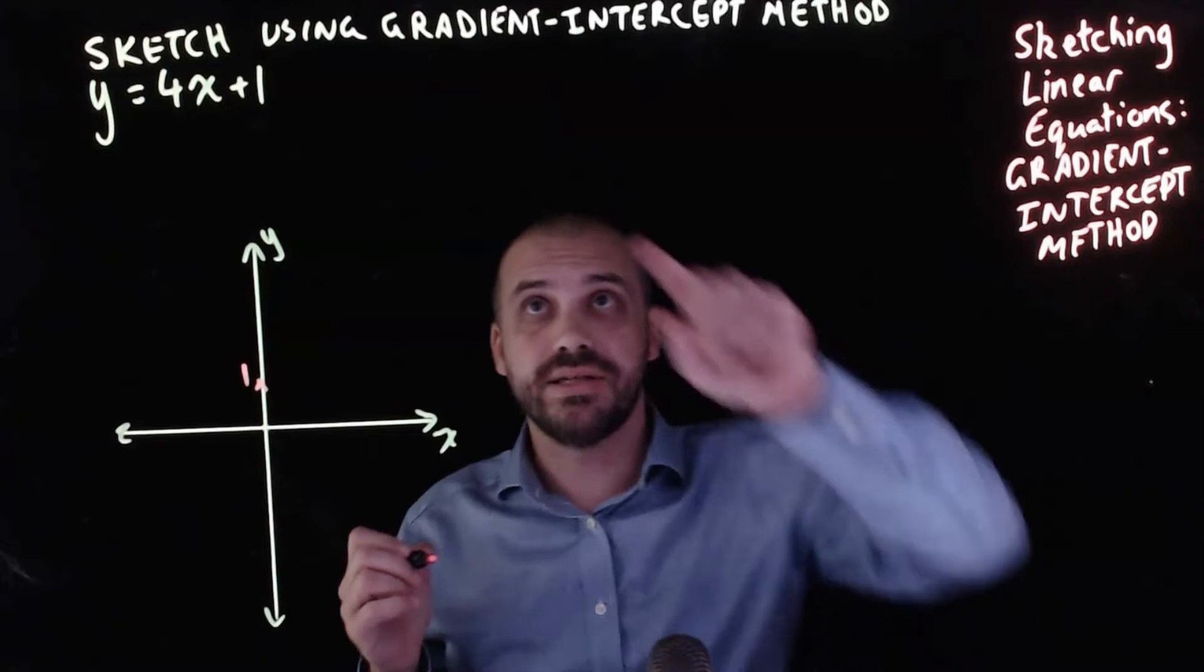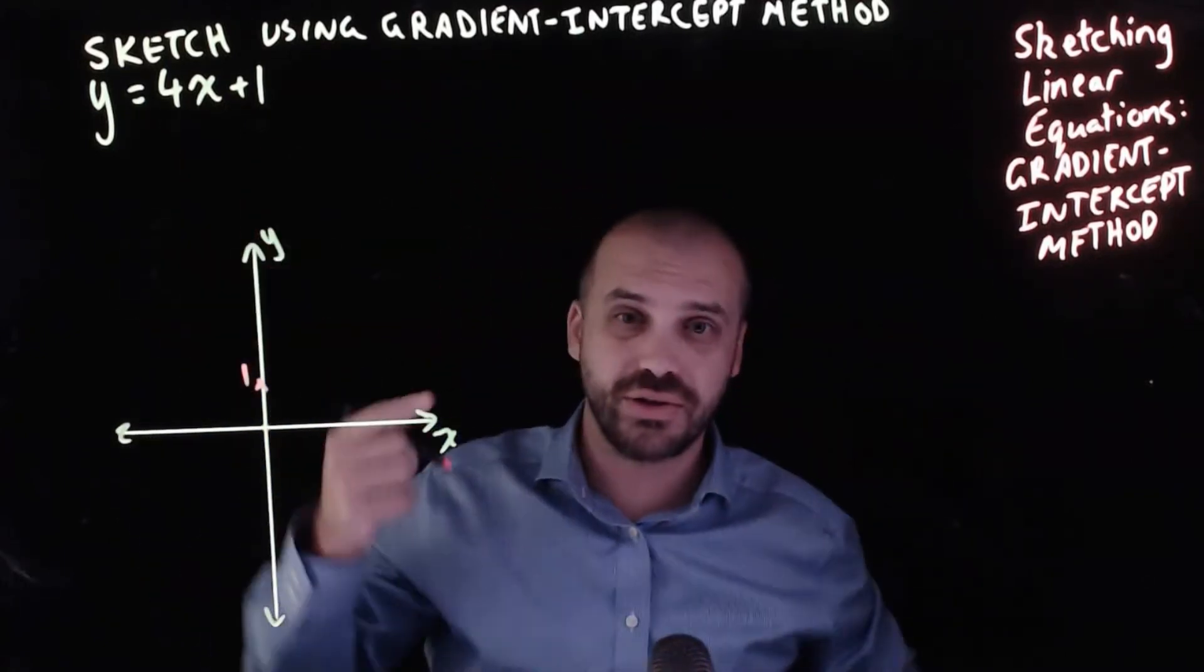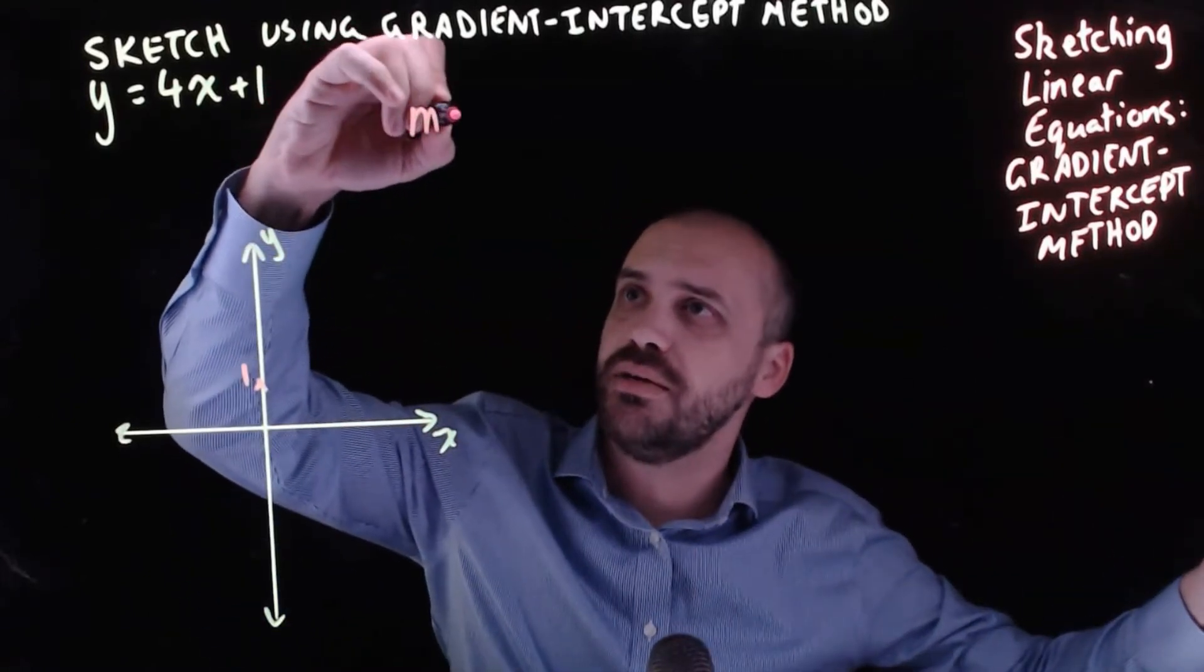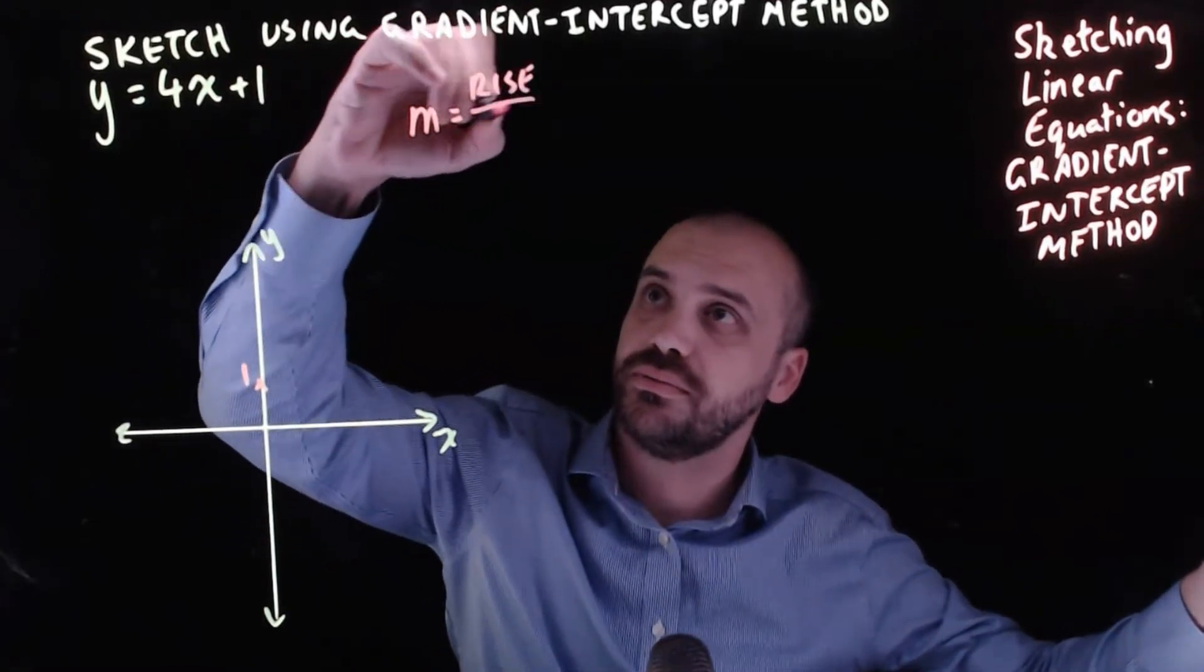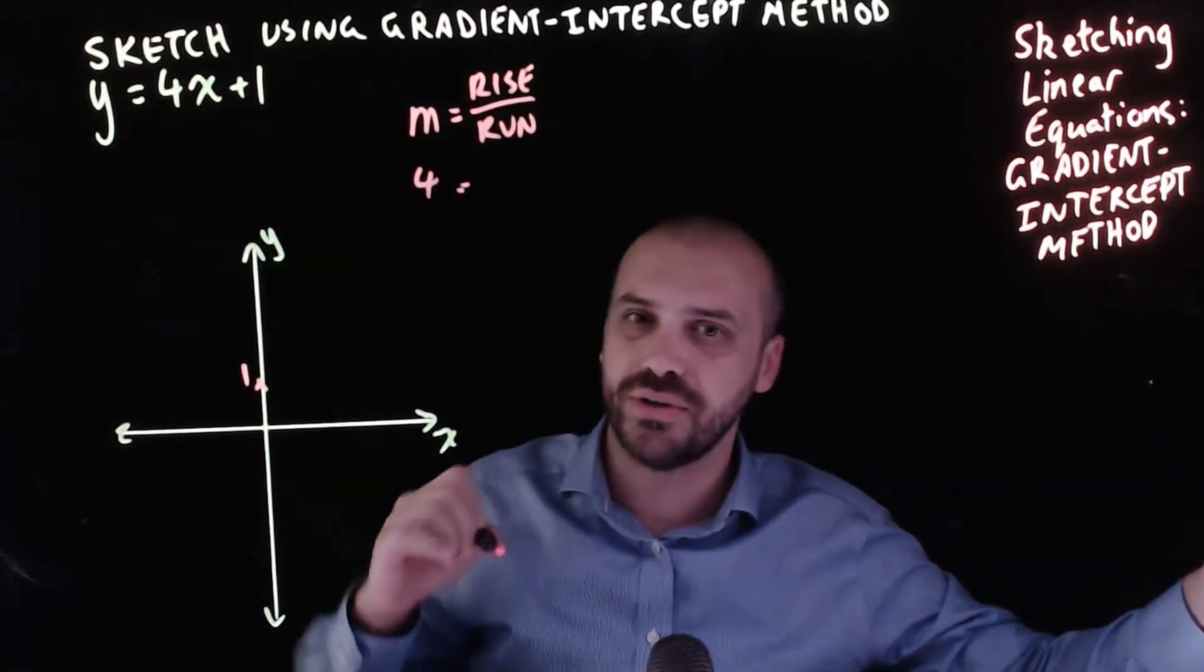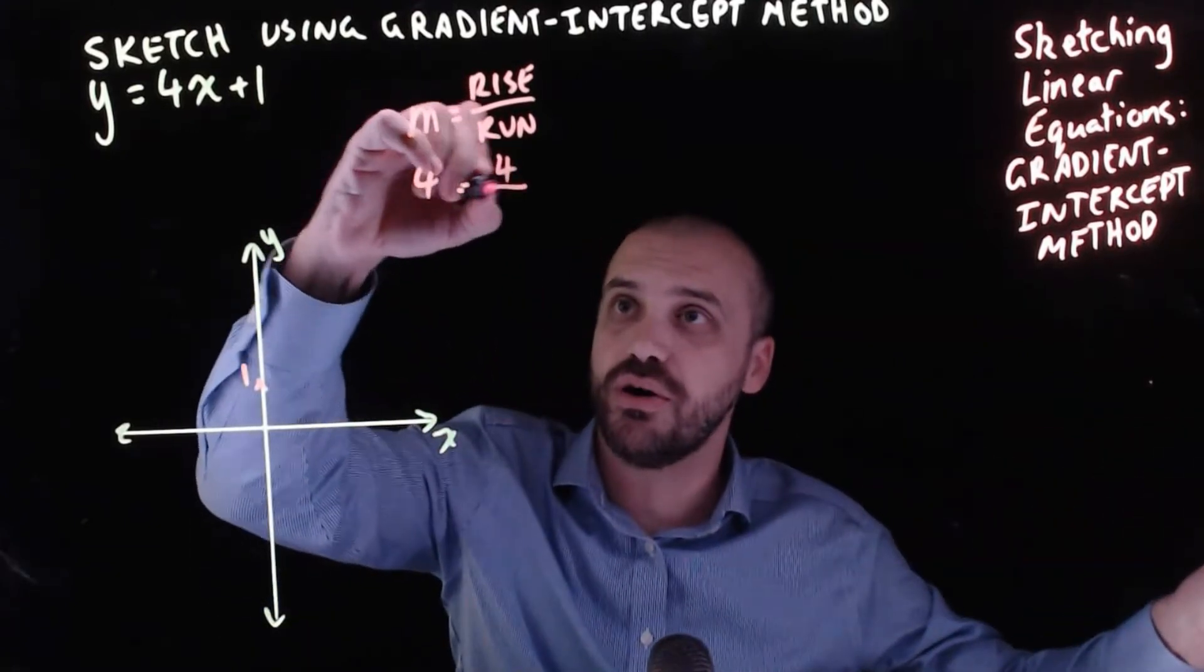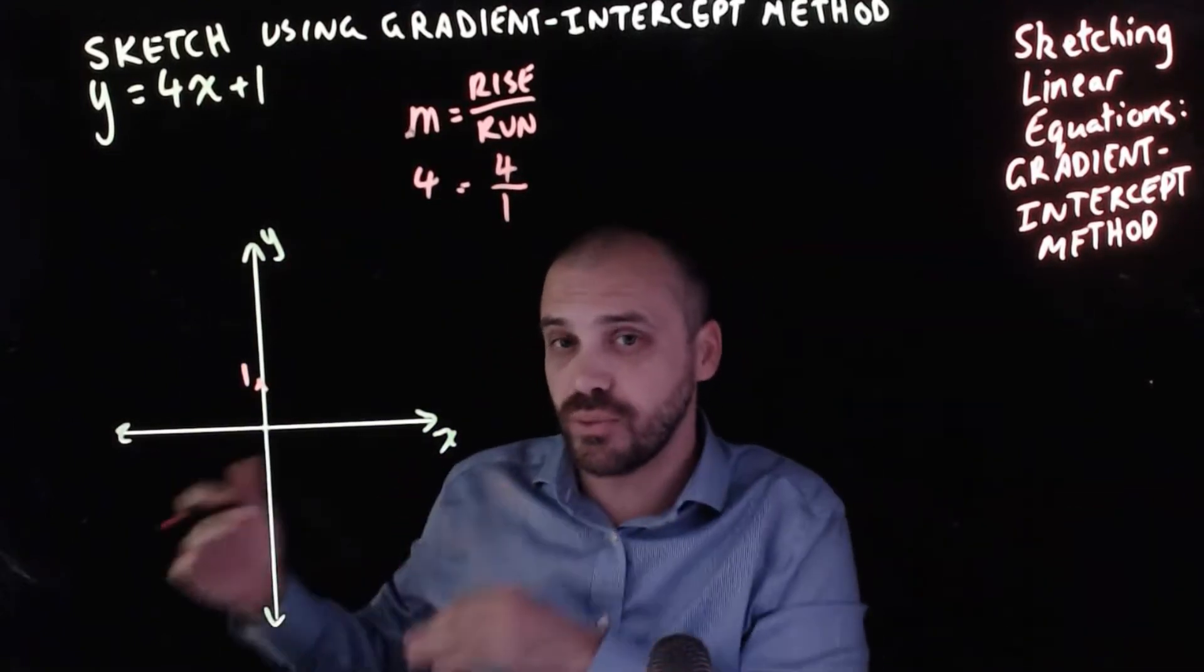And then the other part of this is the gradient part. We look at the gradient. In this case the gradient is 4. Now what does a gradient of 4 mean? Well the gradient m equals rise over run. We know that. But in this case our gradient is 4. So how do we express 4 as a fraction rise over run? Well that's just 4 over 1. Now what does a gradient of 4 over 1 mean?